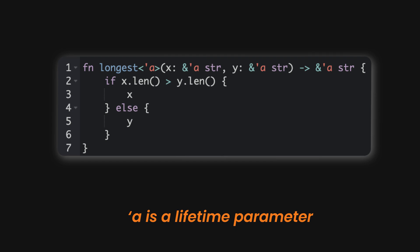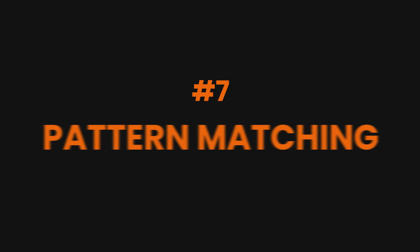So here, tick a is a lifetime parameter. It's Rust's way of ensuring that the references x and y stick around as long as the return value needs them. This prevents us from accidentally returning a reference to something that no longer exists. Pattern matching is where Rust really shines.